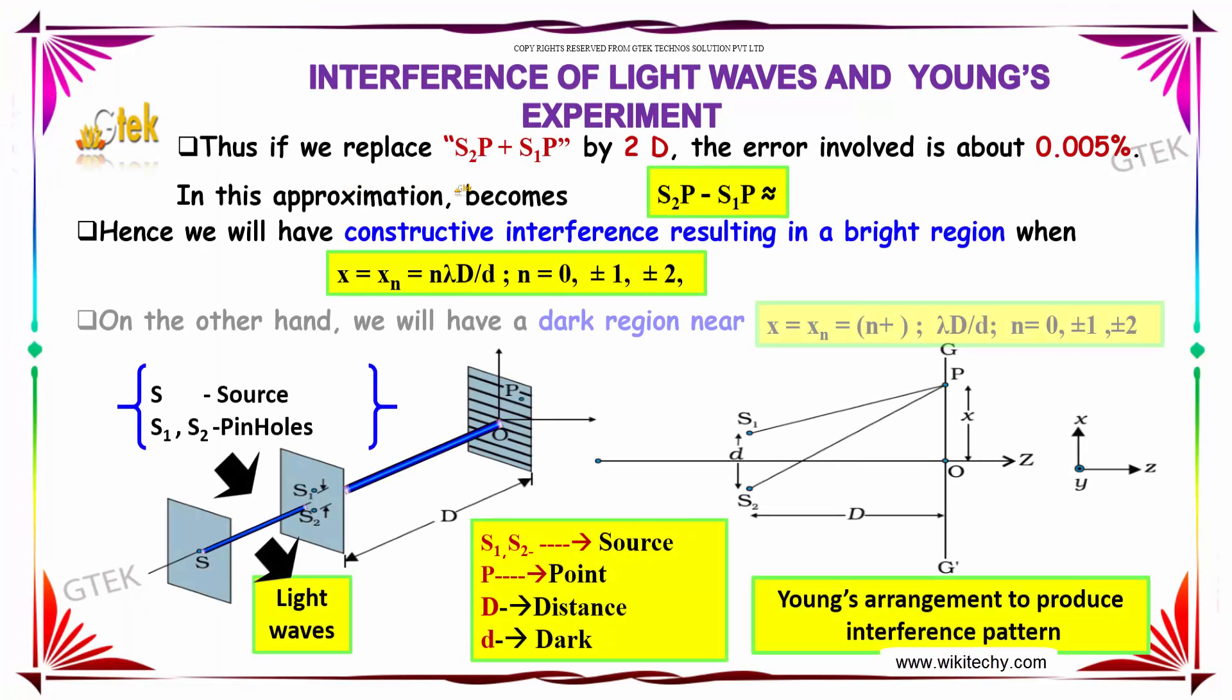Thus, if we replace S2P and S1P by 2D, we will get the error involved is about 0.005 percent. So S2P minus S1P is approximately 2D.